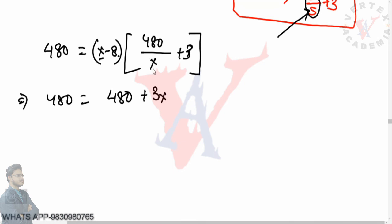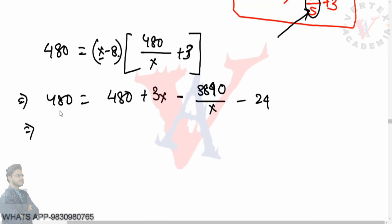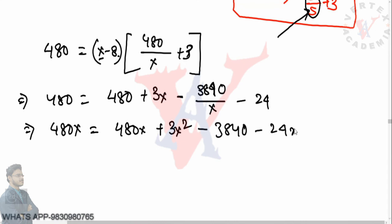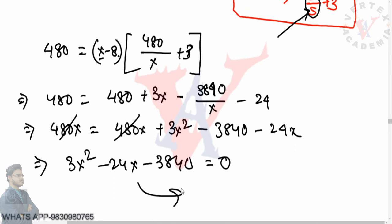Expanding: 480 = (x − 8)(480/x + 3). Multiplying out the terms: 480 = 480 + 3x − 3840/x − 24. Multiplying both sides by x to eliminate the denominator: 480x = 480x + 3x² − 3840 − 24x. The 480x cancels on both sides, giving us: 3x² − 24x − 3840 = 0. We have successfully framed a quadratic equation from the given word problem.